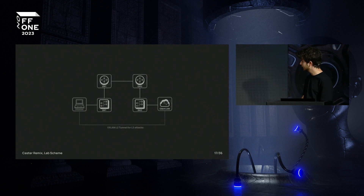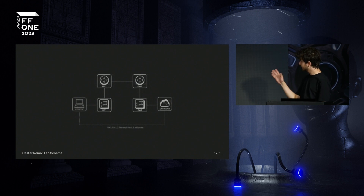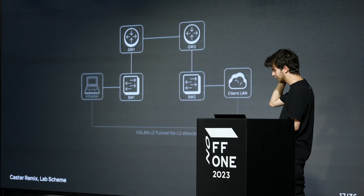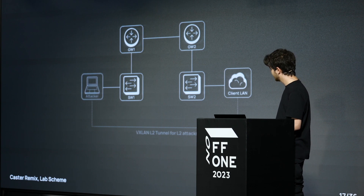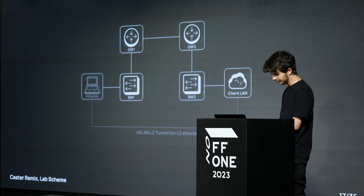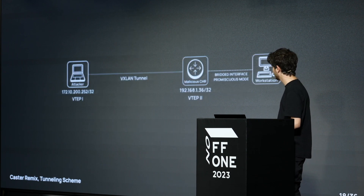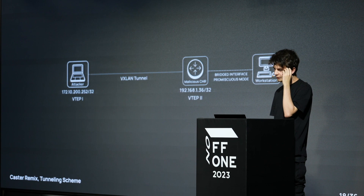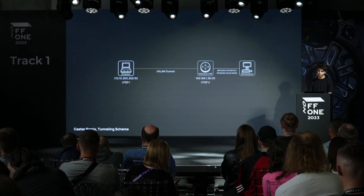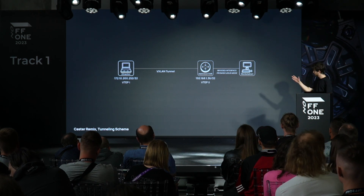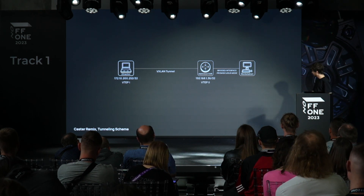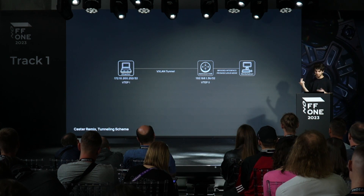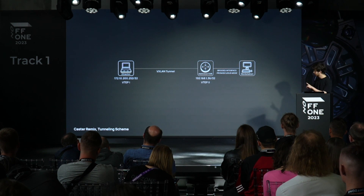Here is the actual arrangement — my experimental lab. A small network: the attacker and the customer network. Inside the customer network, there is a compromised Windows-based machine. The attacker gets access via VXLAN. In VXLAN terminology, devices that encapsulate and decapsulate headers are called VTEPs. We have two VTEPs: the attacker and the malicious CHR operating inside the compromised Windows machine. There is a tunnel between them.